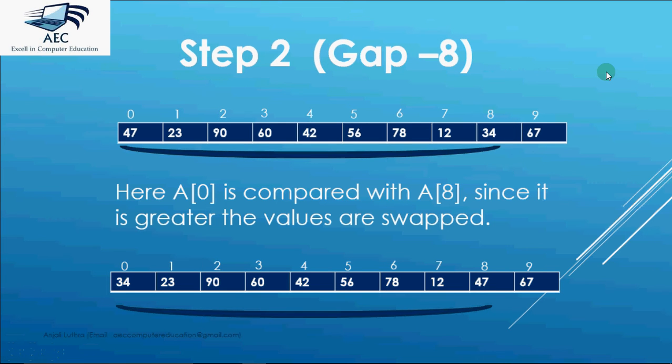Now in case of step 2 the gap decreases and it becomes 8, n minus 2 so the gap is 8 and now we make a comparison with the gap of 8. So we compare a[0] with a[8]. 47 is greater than 34. We interchange the values so we get 34 here and we get 47 here.